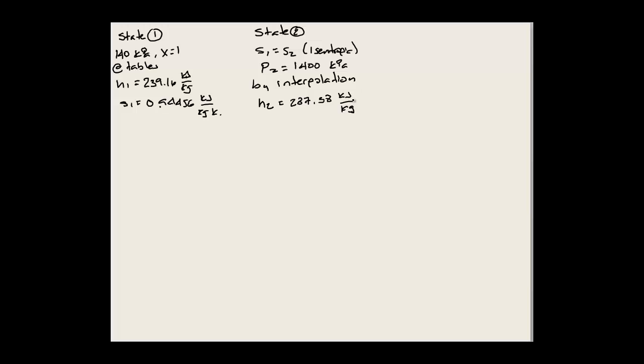And then state 3. While quality is equal to 0, pressure 3 is still 1400 kPa. So by interpolation we know H3 equals 127.22 kJ/kg, and H3 equals H4. Now we substitute.